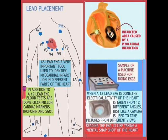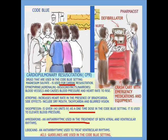Here we have a code team assembled. There's obviously a need for CPR, a defibrillator, a pharmacist, a crash cart, and medications. Some of the drugs that might be used include epinephrine — also known as adrenaline — which vasoconstricts and causes a rise in blood pressure and heart rate. Atropine is used for bradycardias, though there are different types of bradycardias and treatments depending on the situation, so the doctor decides what to use.